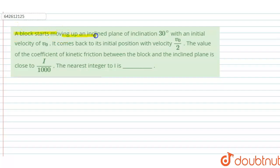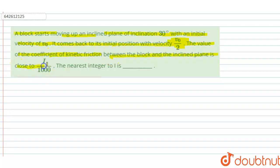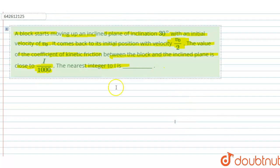In this question, a block starts moving up an inclined plane of inclination 30 degrees with an initial velocity v0. It comes back to the initial position with velocity v0/2. The value of the coefficient of kinetic friction between the block and the inclined plane is close to i/1000. We need to find the nearest integer i.